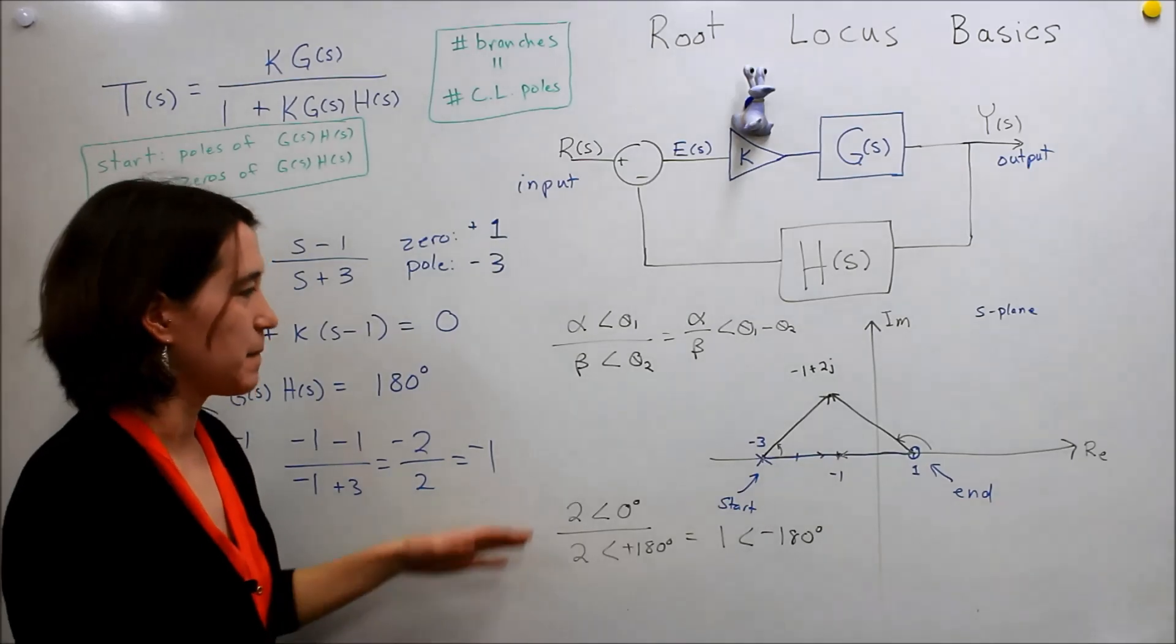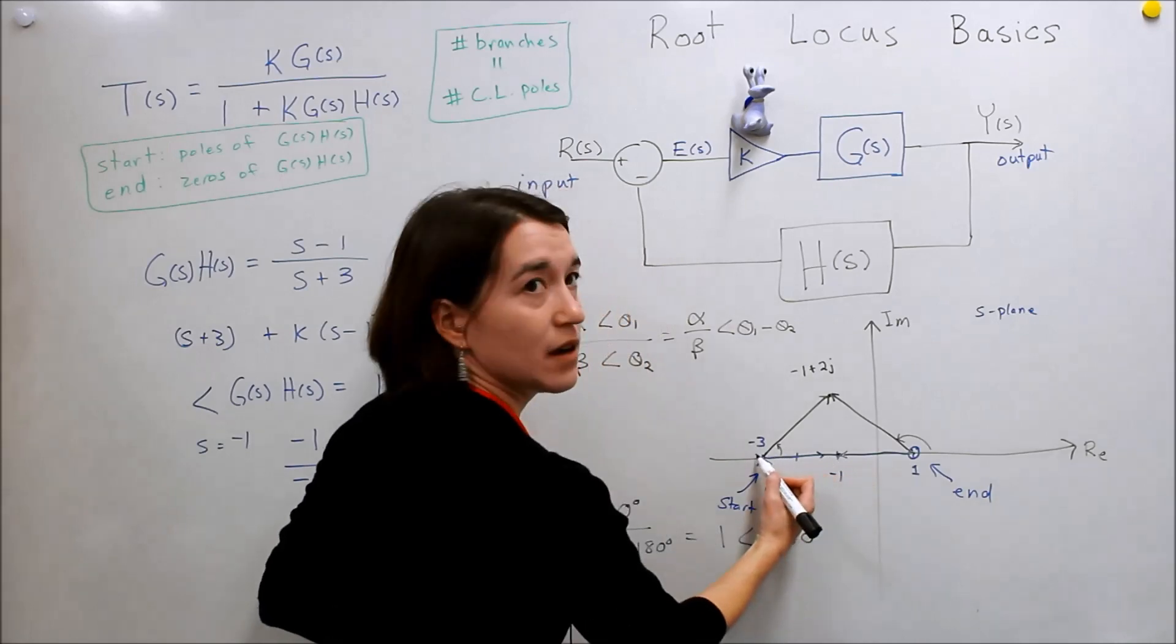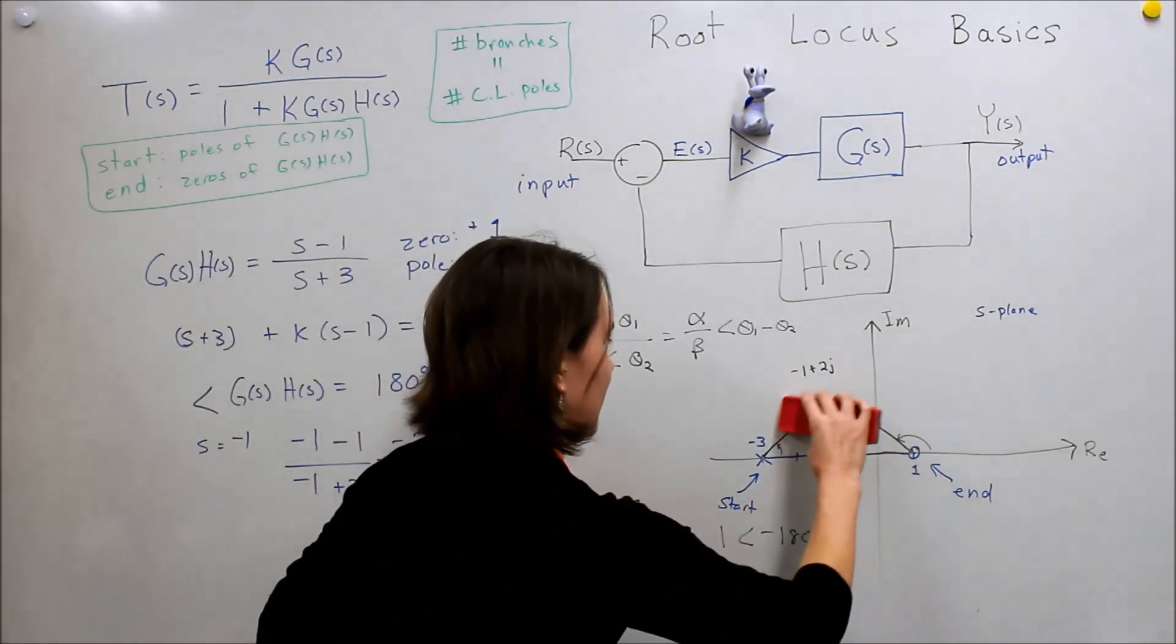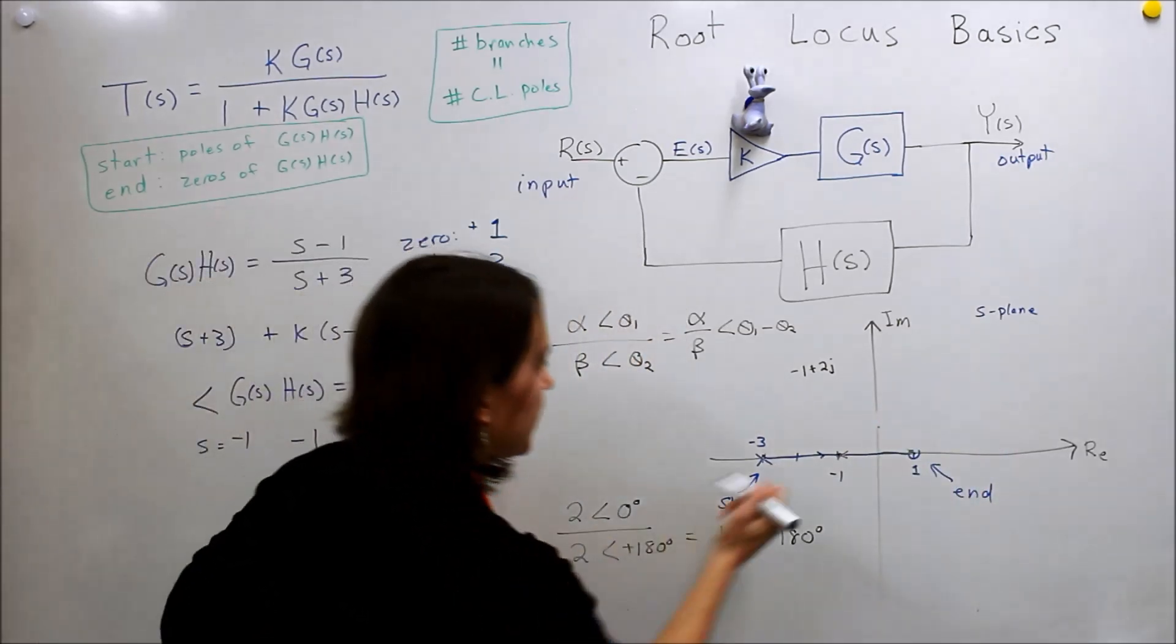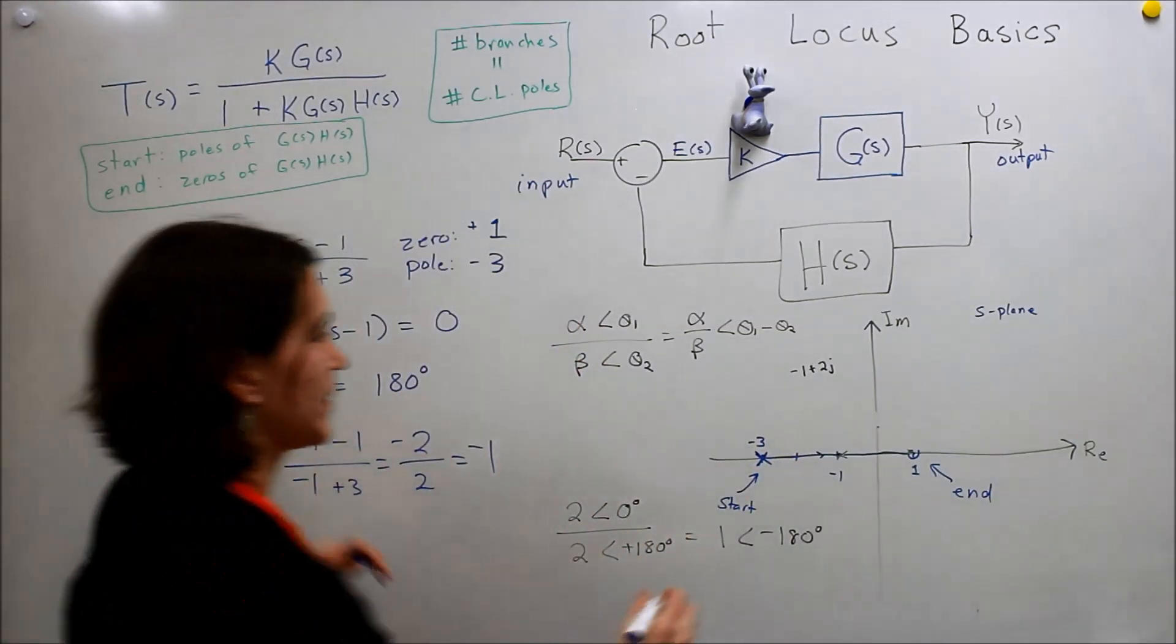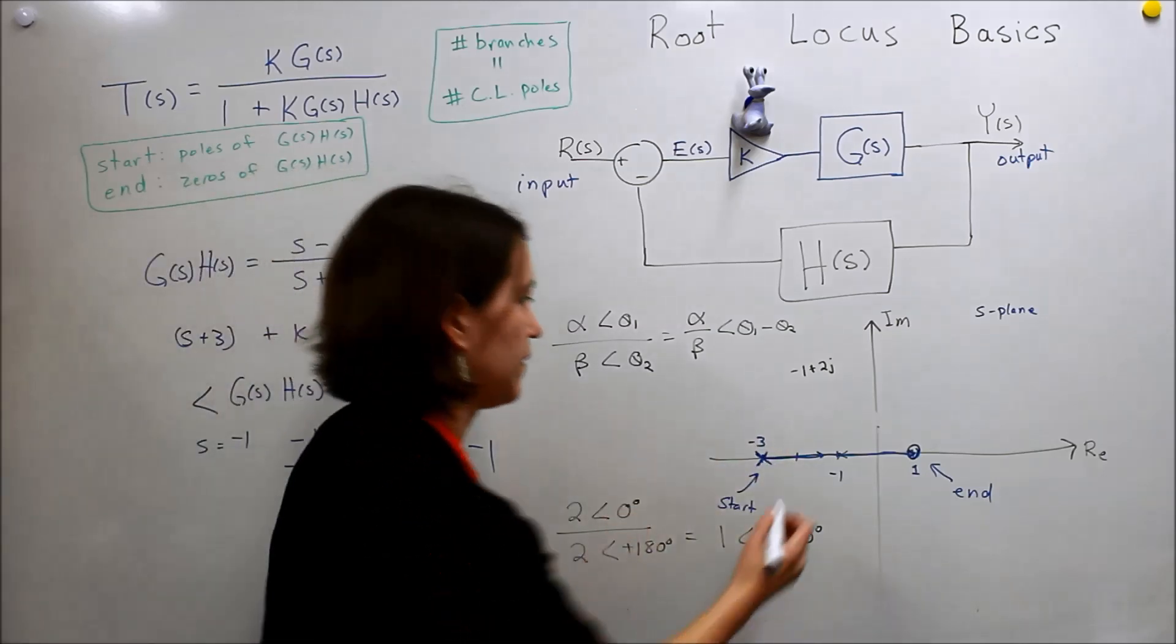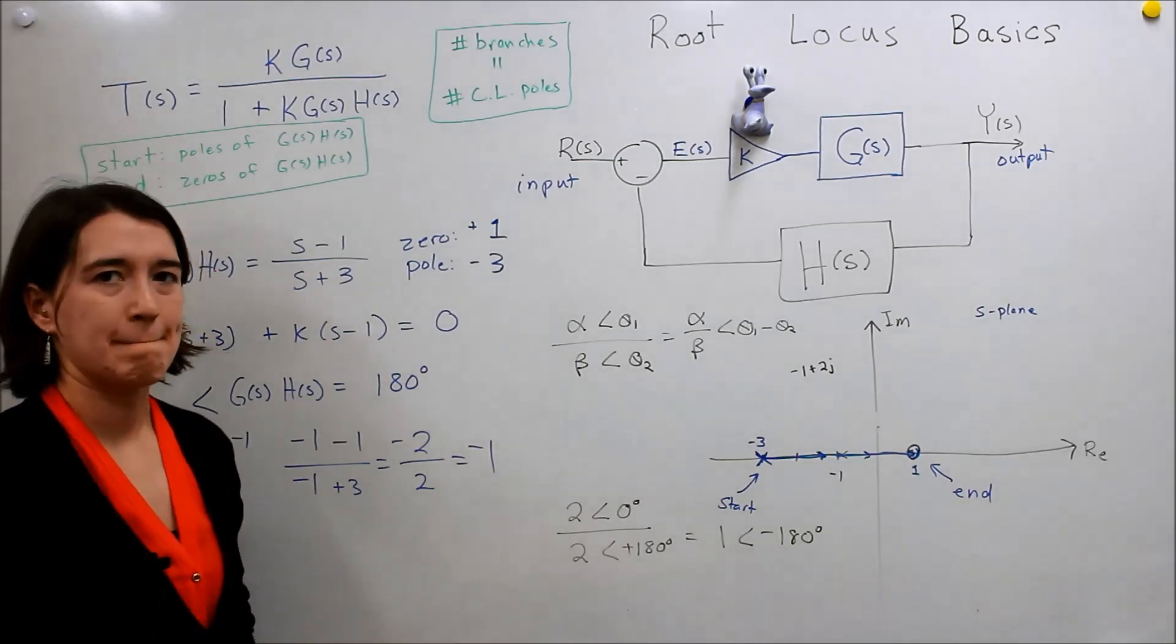So that is, if you followed my explanation, how you can show that this path between these two has to be on the real axis. So I'm going to stop here, but this, the line that we drew here, so this blue line, starting at negative 3, which is the pole of our g times h, straight line to the zero, which was at positive 1, this in itself is the root locus, and it would go from the left to the right here, from our starting point to our end point.